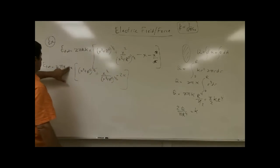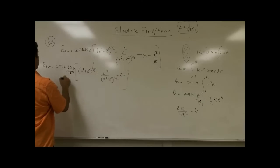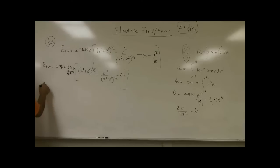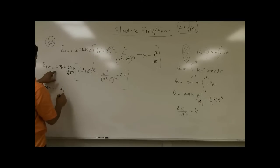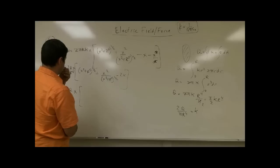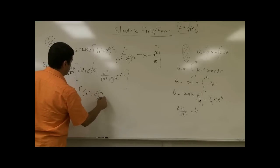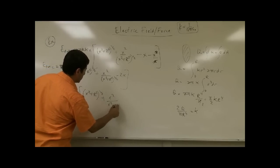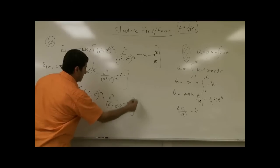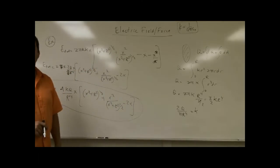Substituting kappa equals 2Q over pi R to the fourth into the expression: the pi cancels, and 2 times 2 gives 4. So E total equals 4kQ over R to the fourth times x times [(x squared plus R squared) to the one half plus x squared over (x squared plus R squared) to the one half minus 2x]. That is the electric field of a disk with non-uniform charge density where sigma varies as r squared.